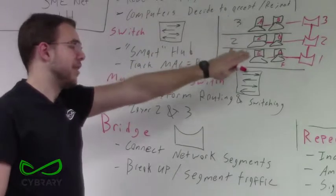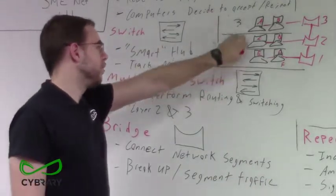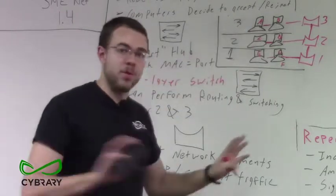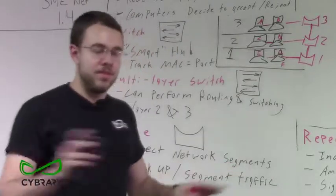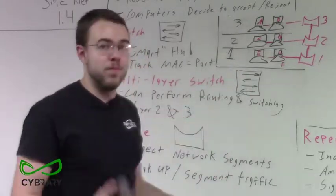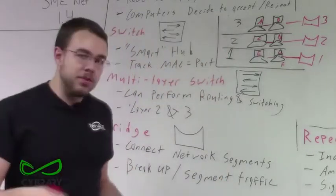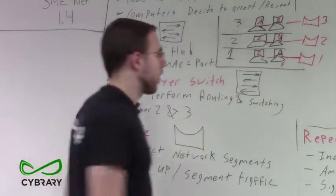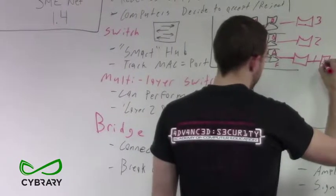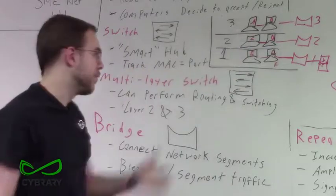Bridges aren't limited to wired connections — we can also have wireless bridges. Say we have floors one, two, and three, but there's no feasible way to physically connect them — perhaps there are titanium floorboards, titanium ceilings, or plenum spaces between floors that prevent running physical cables between the bridges.